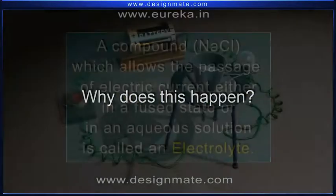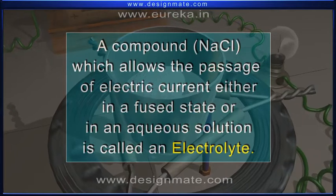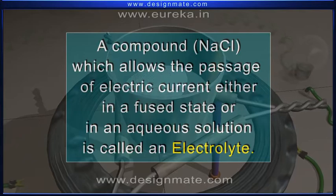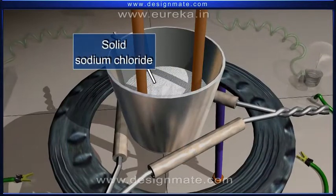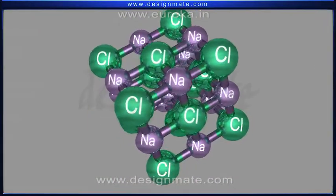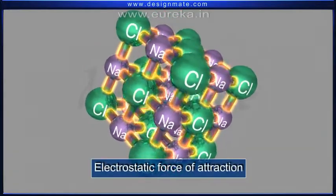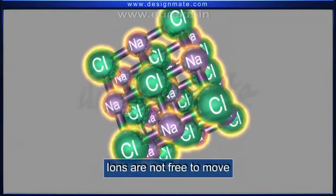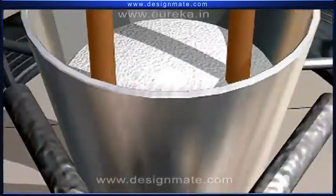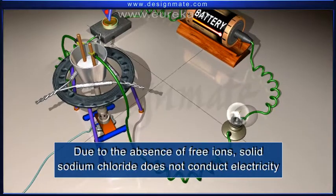Why does this happen? A compound such as sodium chloride, which allows the passage of electric current either in a fused state or an aqueous solution, is called an electrolyte. Sodium chloride is an ionic compound in which sodium and chloride ions are held together by an electrostatic force of attraction. These ions are not free to move. Due to the absence of free ions, solid sodium chloride does not conduct electricity.